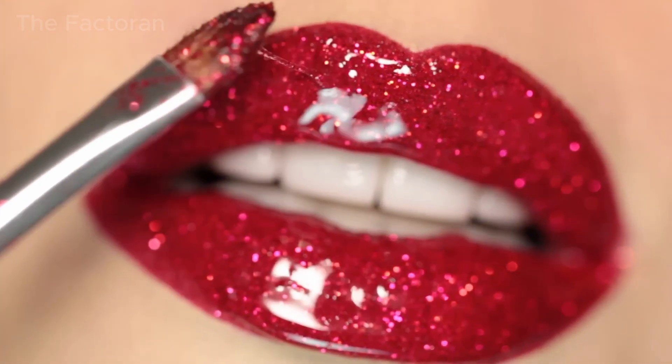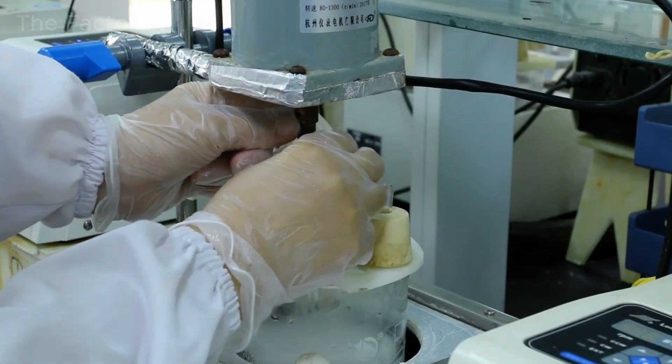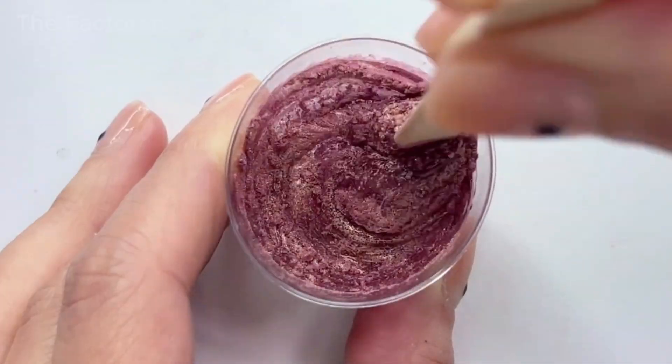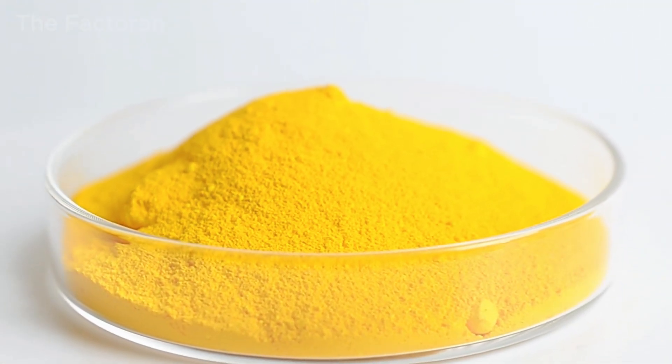To give lipstick not only color but also shine or a pearlescent effect, manufacturers use specialized particles commonly known as pearlescent pigments. These particles are typically made from mica, titanium dioxide, and iron oxides.